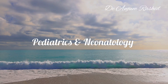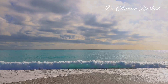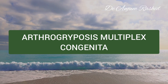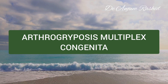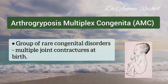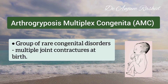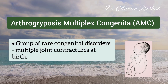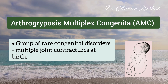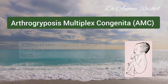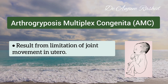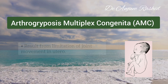Hello everyone, welcome to my channel. This video is about arthrogryposis multiplex congenita, or multiple congenital contractures. Arthrogryposis multiplex congenita is a group of rare congenital disorders in which there are multiple joint contractures present at birth. These disorders result from limitation of joint movement in utero.